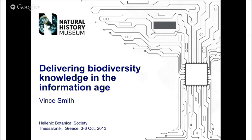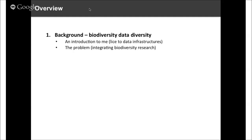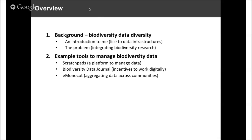My talk title is Delivering Biodiversity Knowledge in the Information Age. I want to say a few words about some of the digital tools that we've been building to tackle problems faced by many different research communities working on taxonomy and systematics. Specifically, I want to highlight the Scratchpads, a platform for communities to help manage biodiversity data; the new Biodiversity Data Journal, which is linked to the Scratchpads; and the eMonocot project, which is an example of how communities working in different Scratchpads can bring together their data across different taxonomic disciplines.